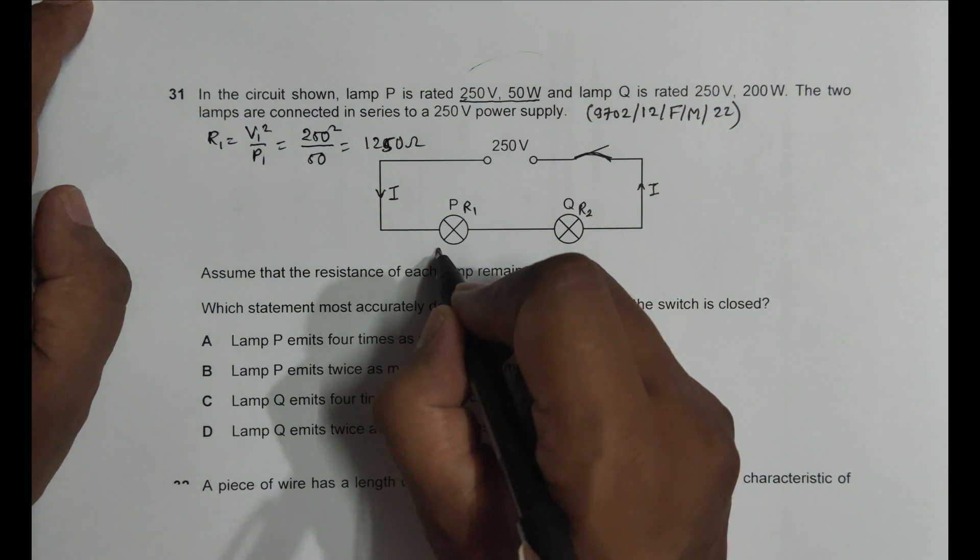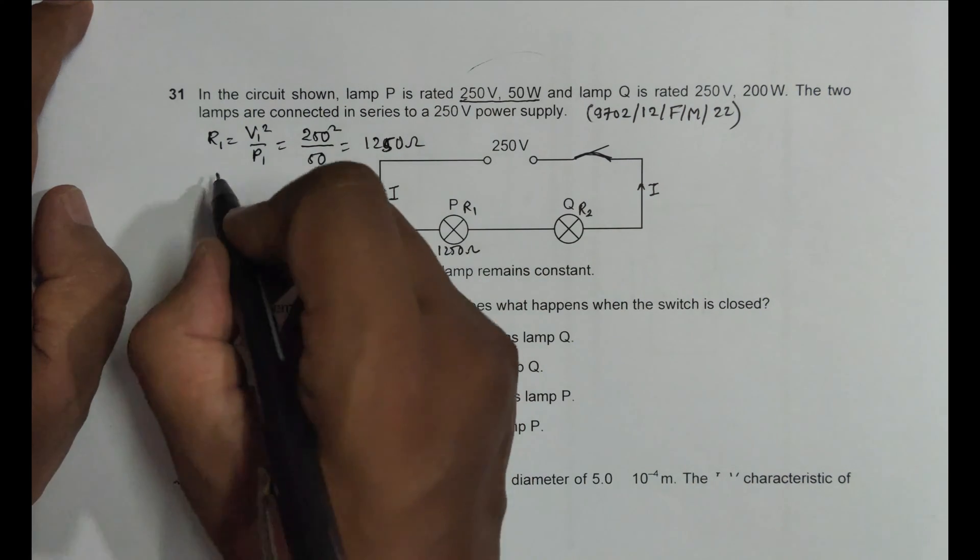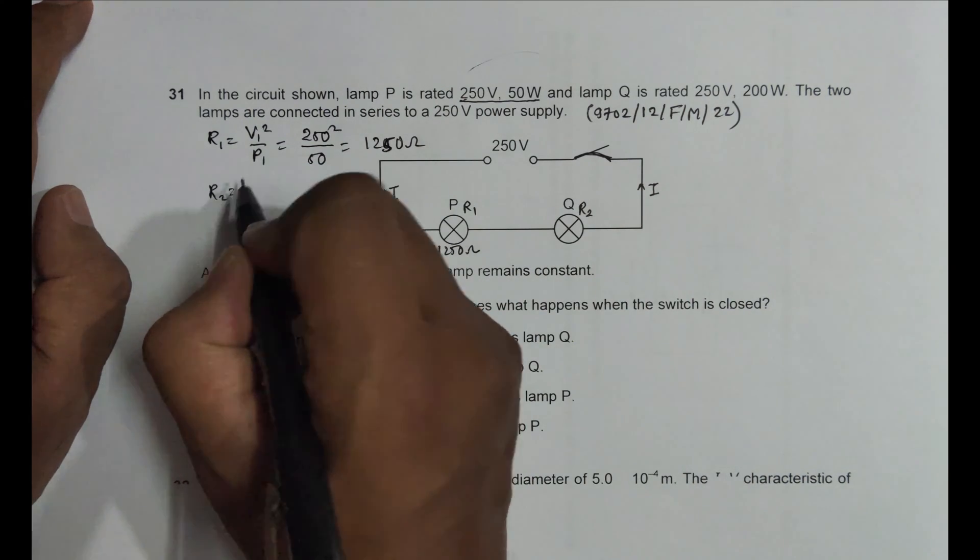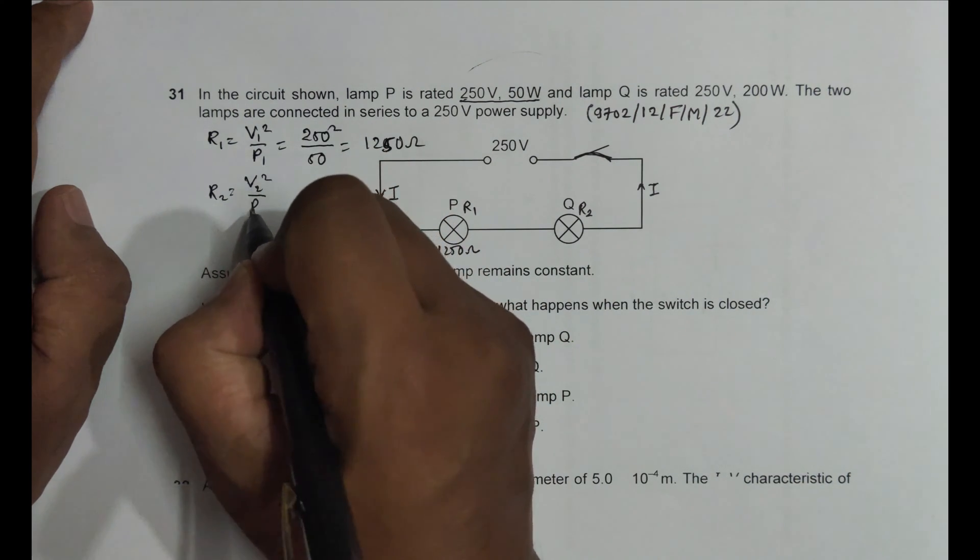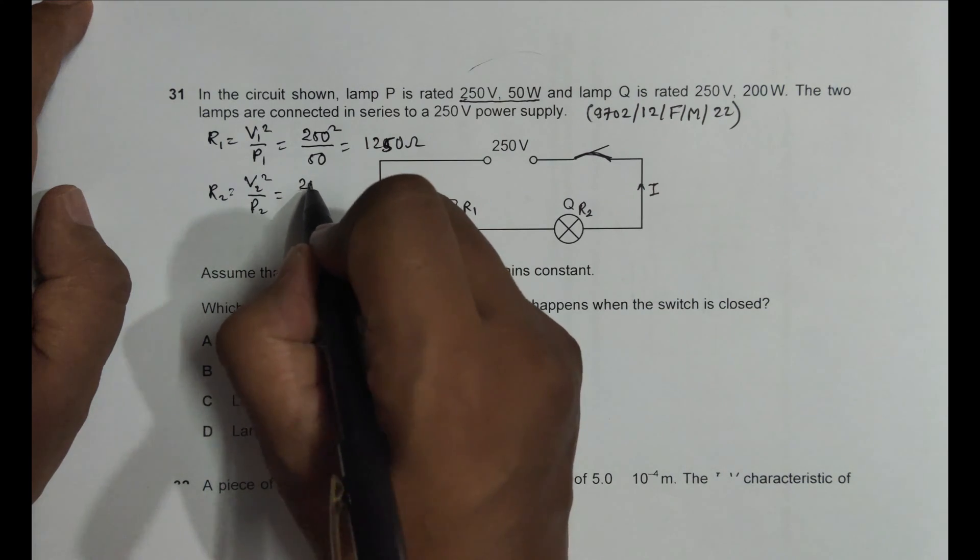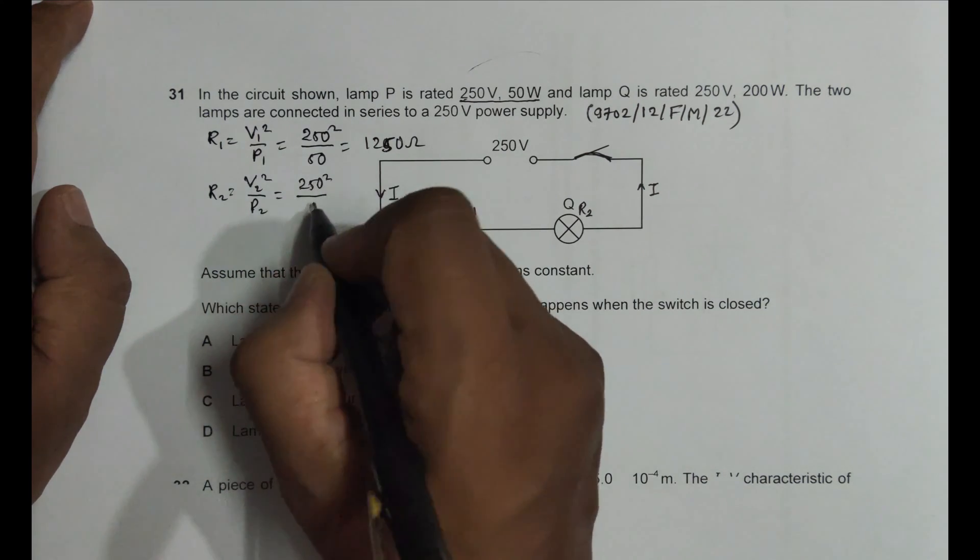That becomes equal to 250 squared divided by 50, which equals 1250 ohm. So R1 is 1250 ohm. Next, R2 is equal to V2 squared by P2.